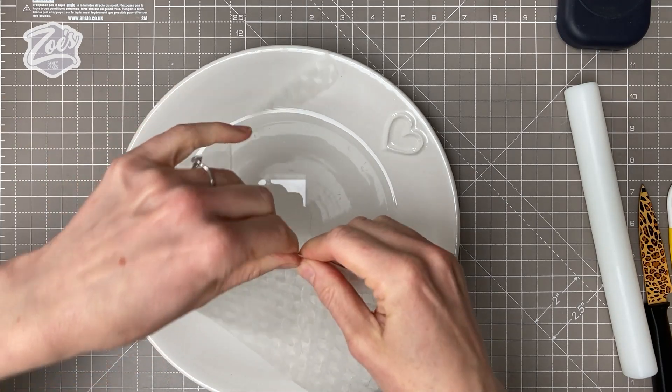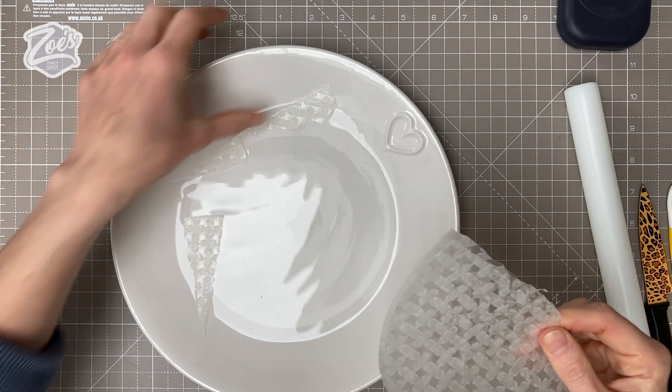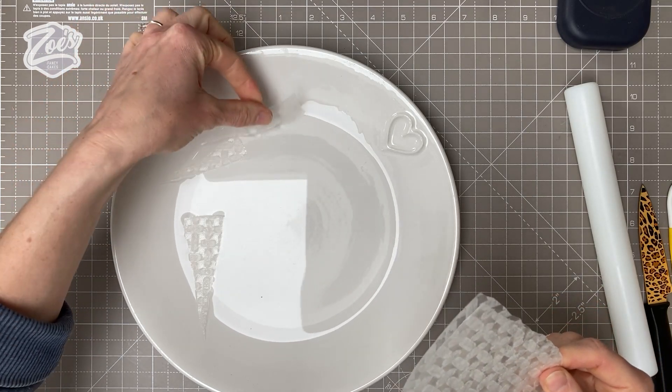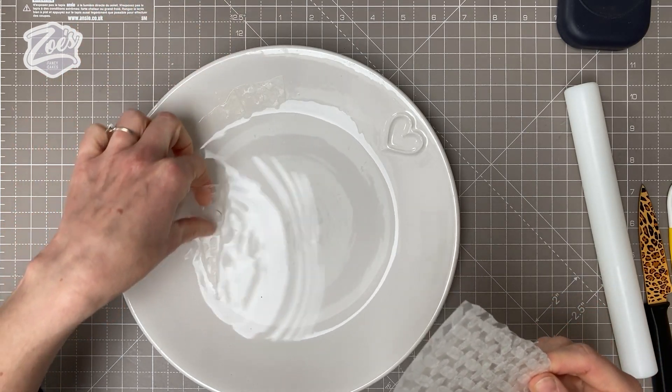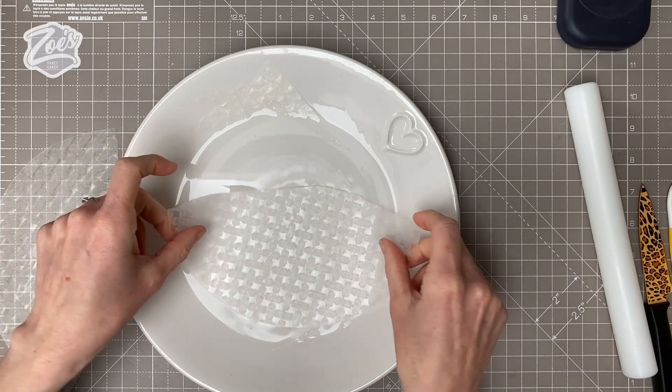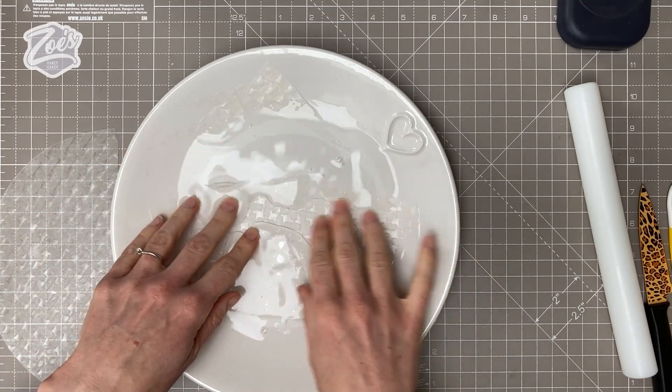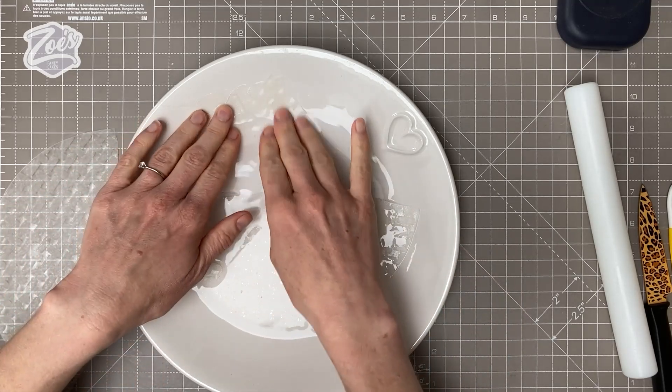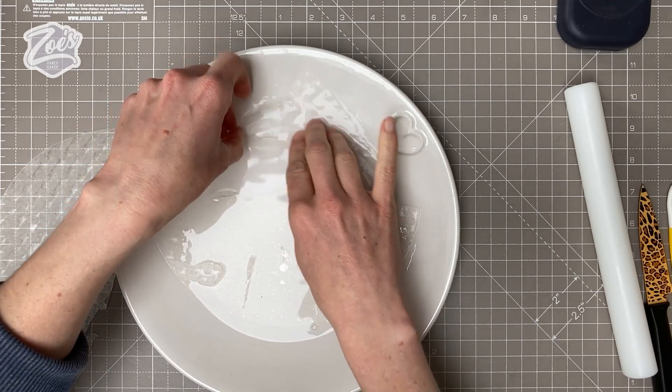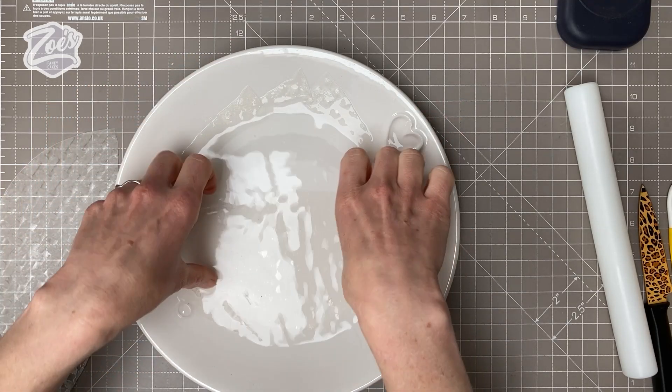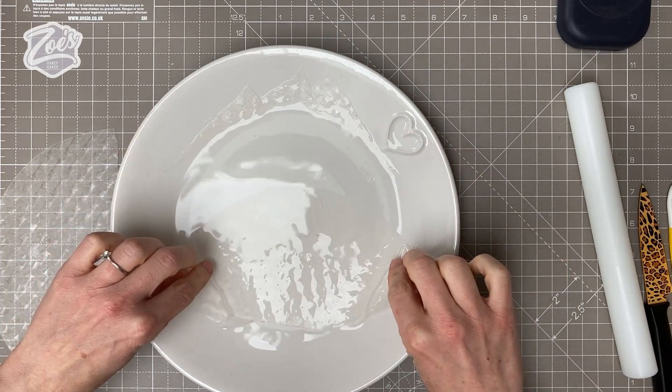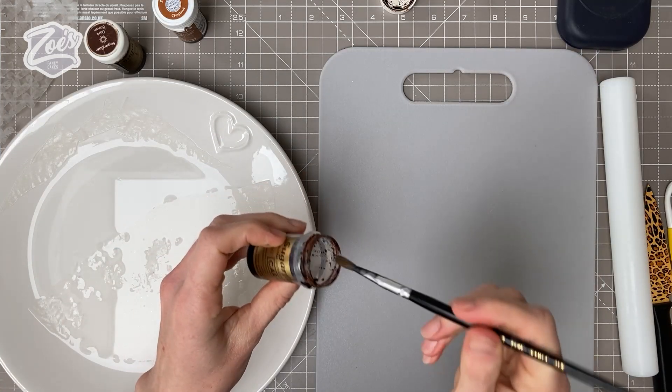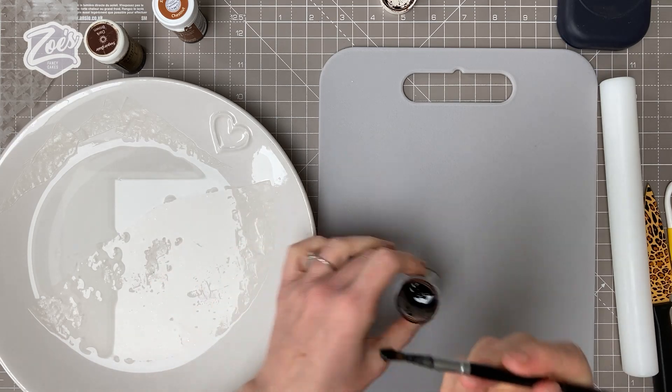Got some little pieces that have snapped off, but that's fine. We can do stuff with those as well. Let's submerge that in the water. You don't want to leave it in there too long, otherwise it'll go really soggy, but it needs to be long enough that it starts becoming flexible and that little square pattern should disappear.